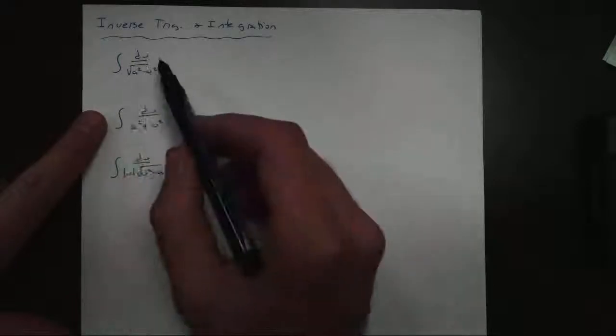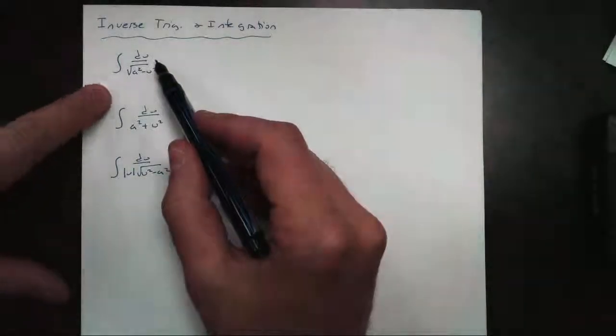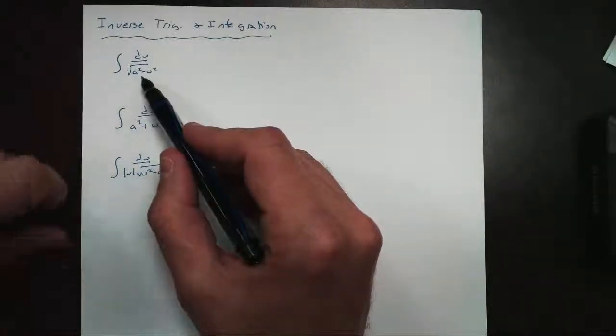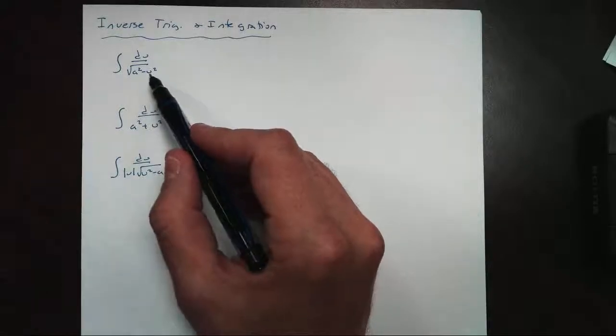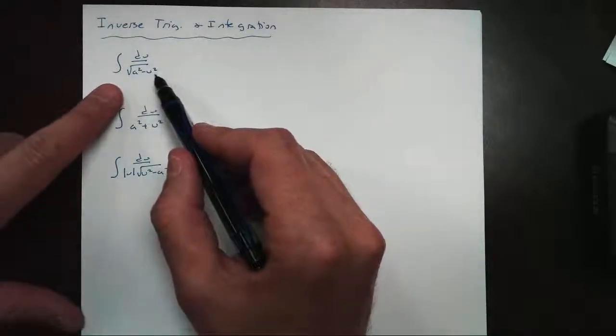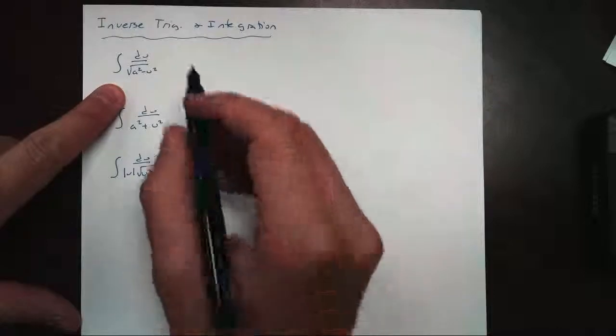For example, for the first one right here, we have the antiderivative du over the square root of a squared minus u squared. You might recognize this pattern as arc sine, and that's exactly what this is.